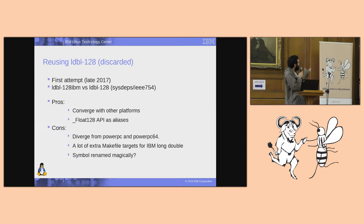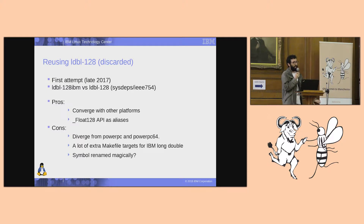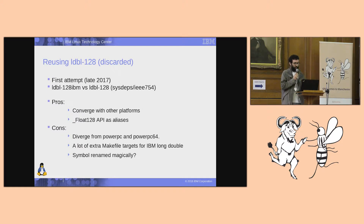My plan was to remove the LDBL-128-IBM directory from the implies files — or rather, move it toward the end — so that we would use the LDBL-128 directory for IEEE long double first.